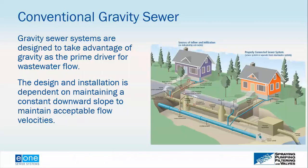Gravity sewer systems are designed to take advantage of the force of gravity as the prime driver to move wastewater flow. The design installation is dependent on maintaining a constant downward slope. The only thing that moves the wastewater is the force of gravity — everything flows downhill.